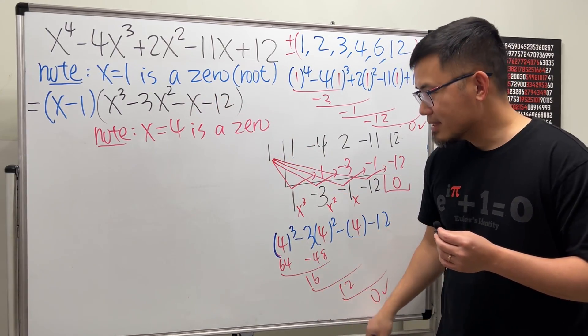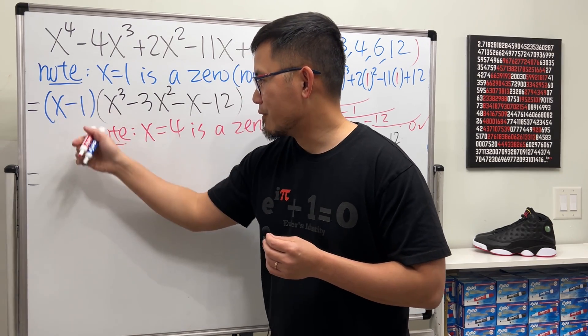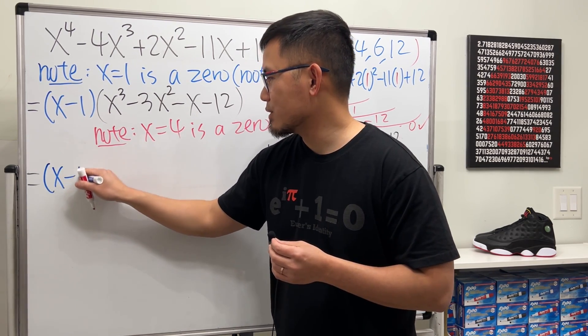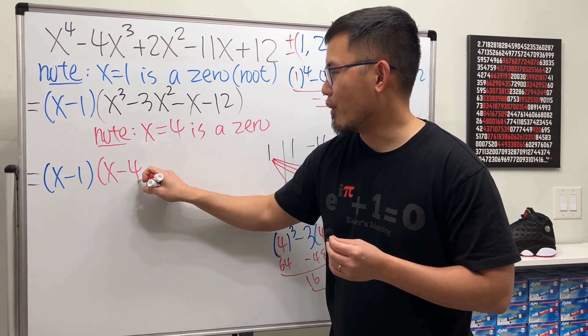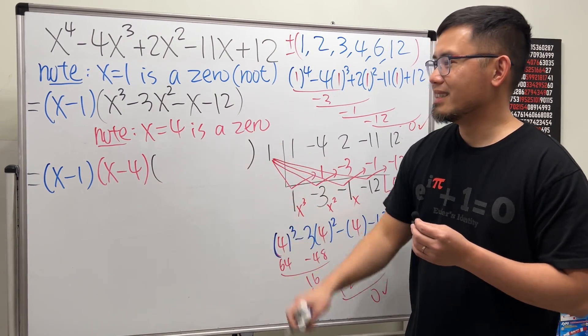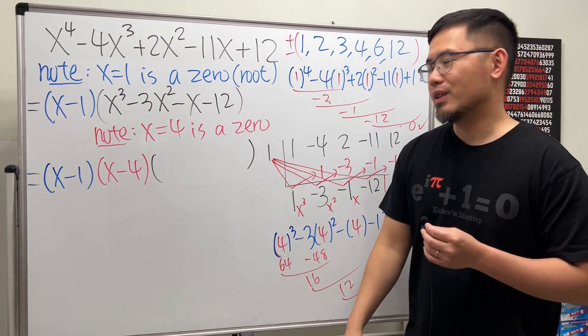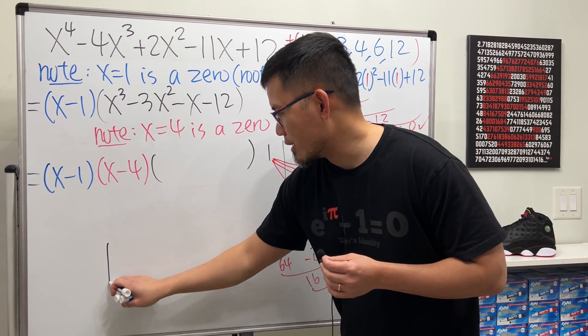But right here I will just say note: this time x equals 4 is a zero for this right here. So that means we know this right here is equal to our first factor, which is still x minus 1, and the next factor will be x minus 4, and we'll just have to figure out what do we have left. And to do so, again we'll do synthetic division. So let me just put it down right here real quick for you guys.